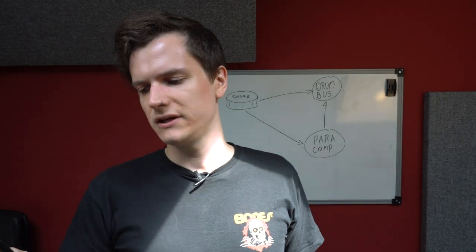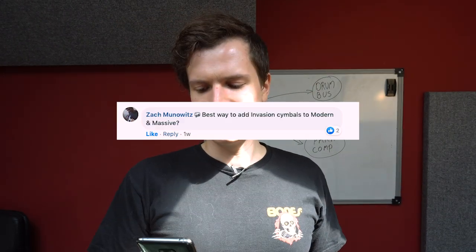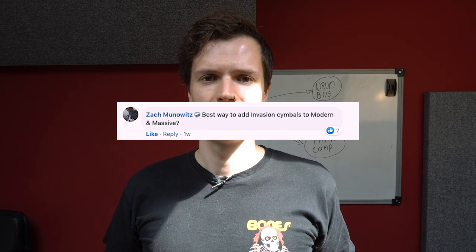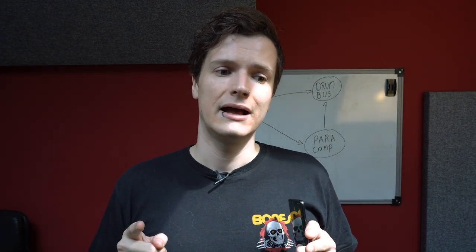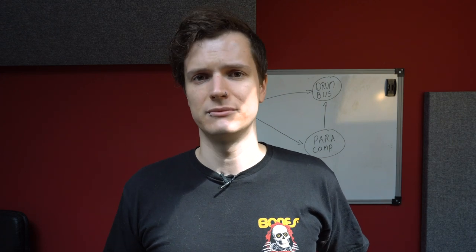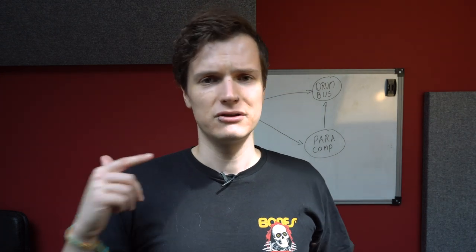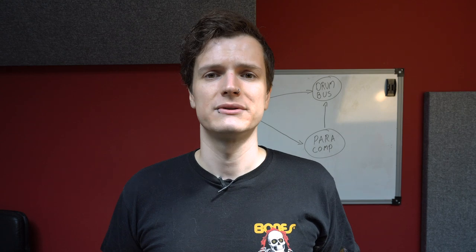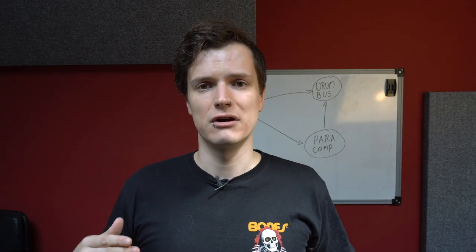Next question from Zach: best way to add Invasion cymbals to Modern and Massive? I also made a video on this on our YouTube. Load up an instance each of the libraries in Kontakt — one version of Invasion, one version of Modern and Massive in the same instance of Kontakt. Turn both to read MIDI channel Omni. Then simply map cymbals to the keys you want. Both libraries are reading the same MIDI channel, so it's going to be triggering samples from both libraries.